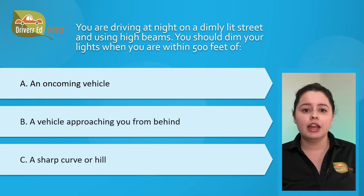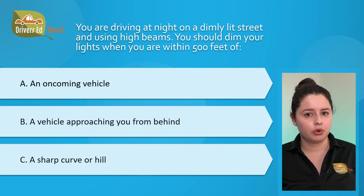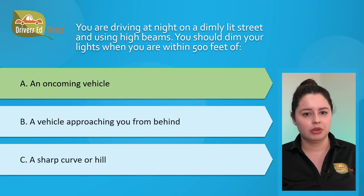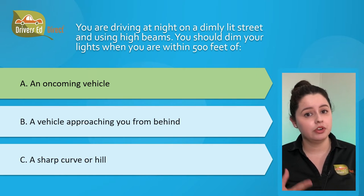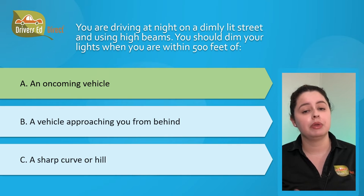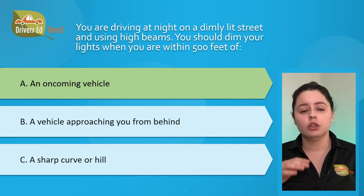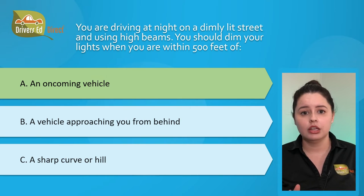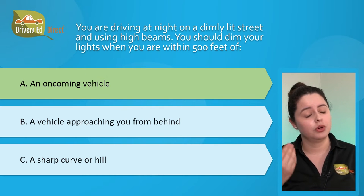Question number six: you are driving at night on a dimly lit street using high beams. You should dim your lights when within 500 feet of: A) an oncoming vehicle, B) a vehicle approaching from behind, or C) a sharp curve or hill. The correct answer is A, an oncoming vehicle. You must turn your high beams off when another vehicle is approaching within 500 feet, and when you are less than 300 feet behind another vehicle. High beams reflected in mirrors make it difficult for drivers ahead to stay focused on the road.